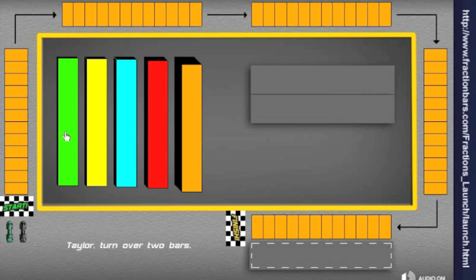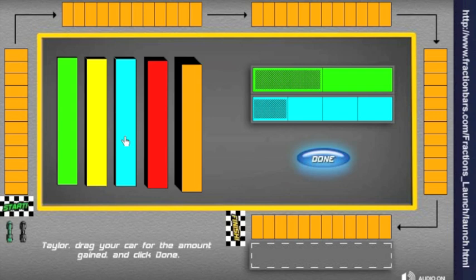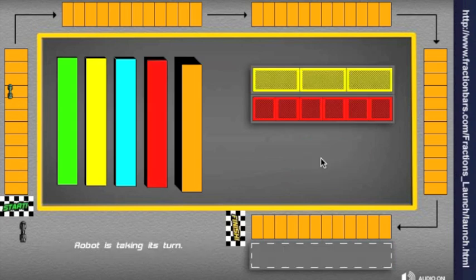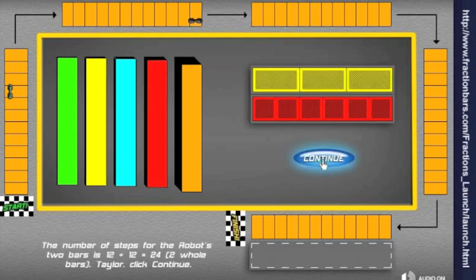Taylor turns over two bars and drags the race car for the total shaded amount. If she needs to determine the number of steps for either bar, it can be dragged down and compared to the twelfths bar. The robot moves automatically. Very good turn for the robot. Two whole bars.